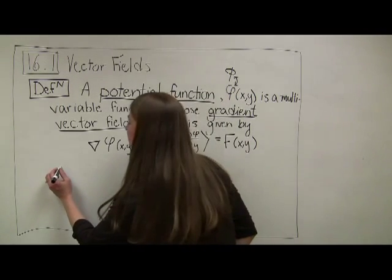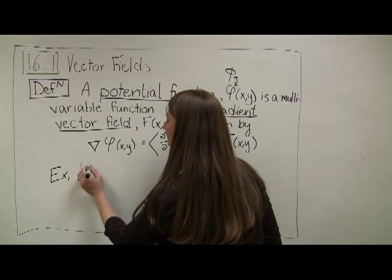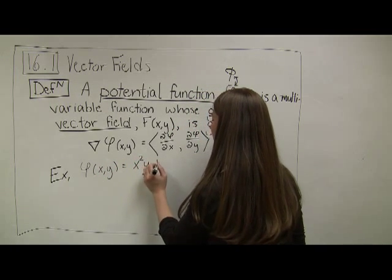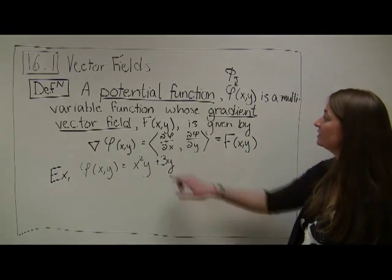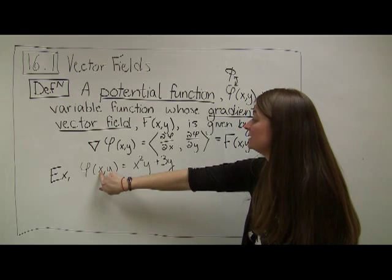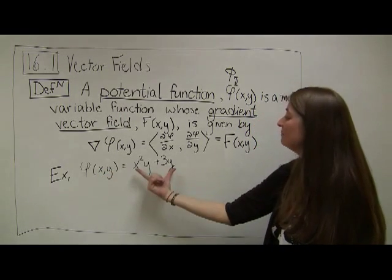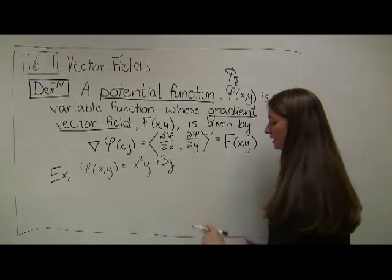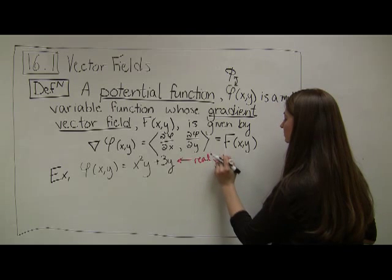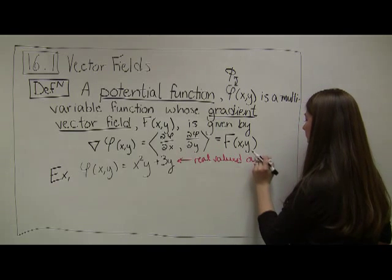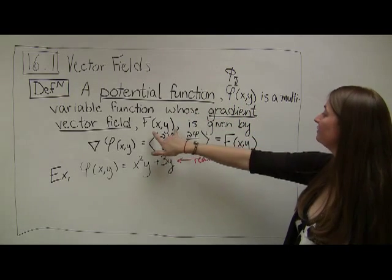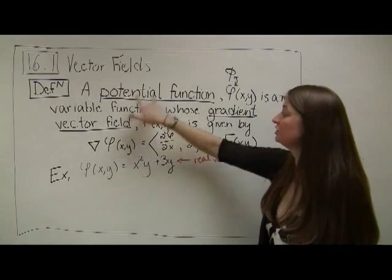Maybe this looks like a lot of jargon, but the concept is pretty straightforward. Let's say I have a potential function phi of xy equal to x squared y plus 3y. Notice that in order for it to be a potential function, we're talking about a two-variable function with variables x and y, and the output is not a vector — it's a real-valued output. Potential functions always have real-valued outputs. Now I can find the gradient vector field generated by this potential function.